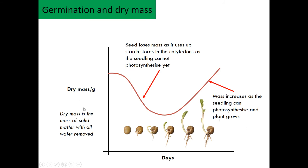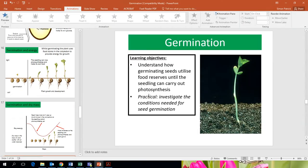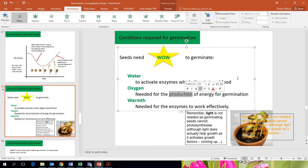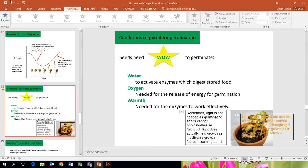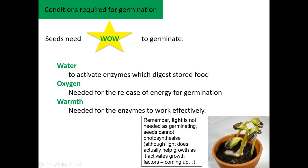The dry mass is the mass of the solid with all water removed. Seeds need water to activate the enzymes, oxygen for respiration to allow energy to be released — and remember, you can't produce energy, you have to release it. Seeds also need warmth for the enzymes to work effectively, so they need to be at the optimum temperature. Light is not needed yet as seeds can't photosynthesize — light is actually not needed for initial germination.